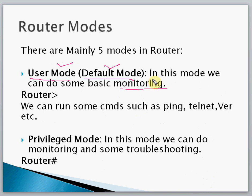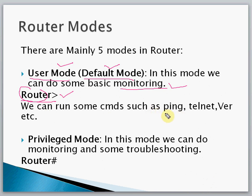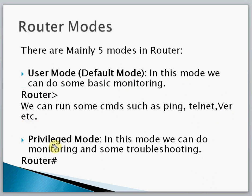The User Mode is like limited access — for example, a junior engineer who is new to the company may only be given this access to monitor some parameters daily. In this mode, the prompt shows the router name followed by the '>' symbol. We can run commands such as ping, telnet, and show version.